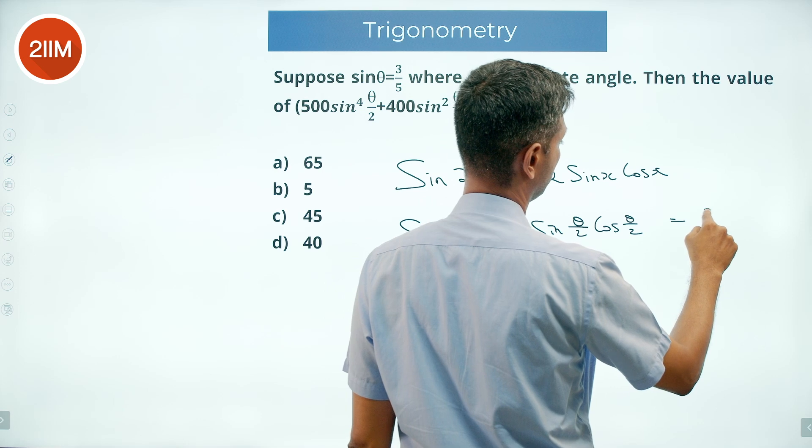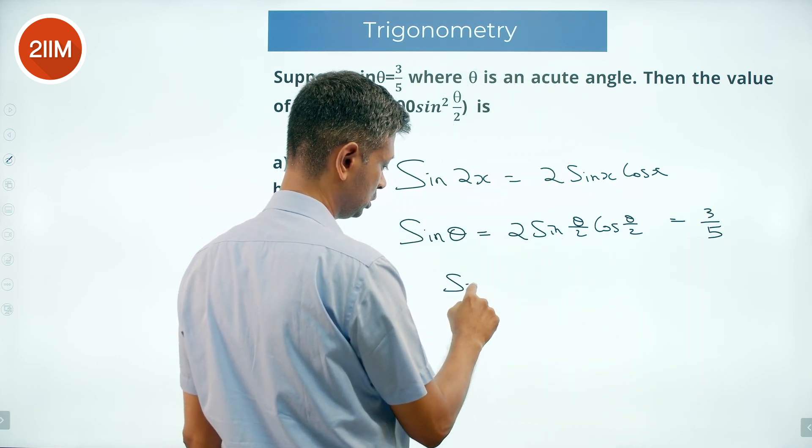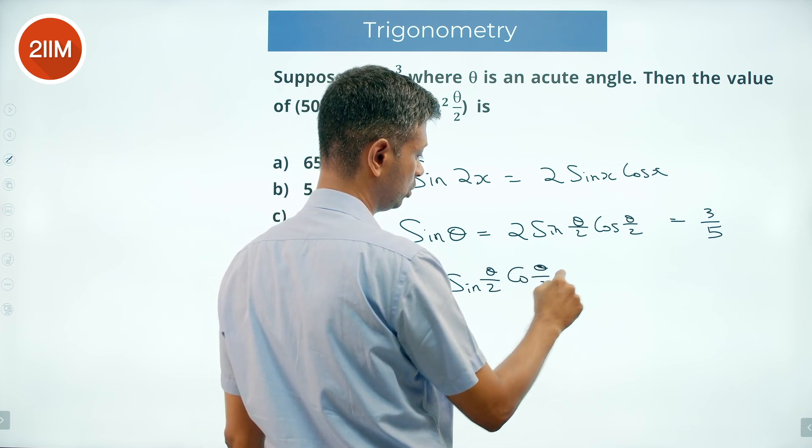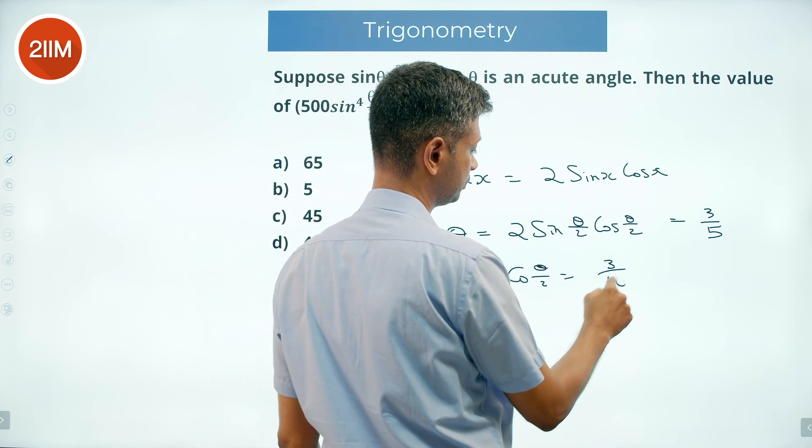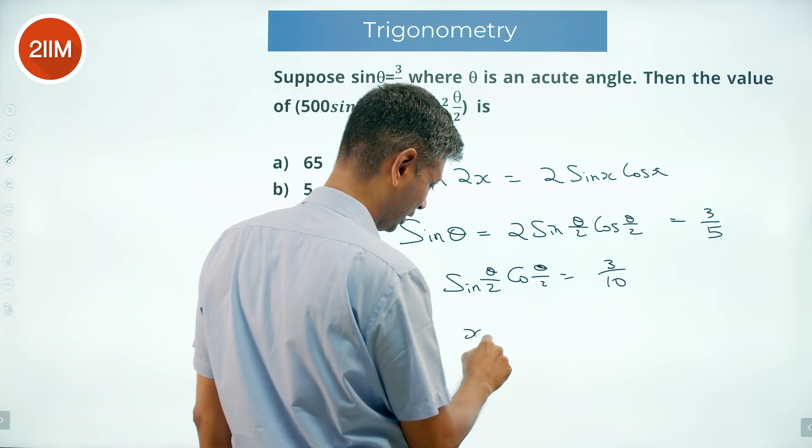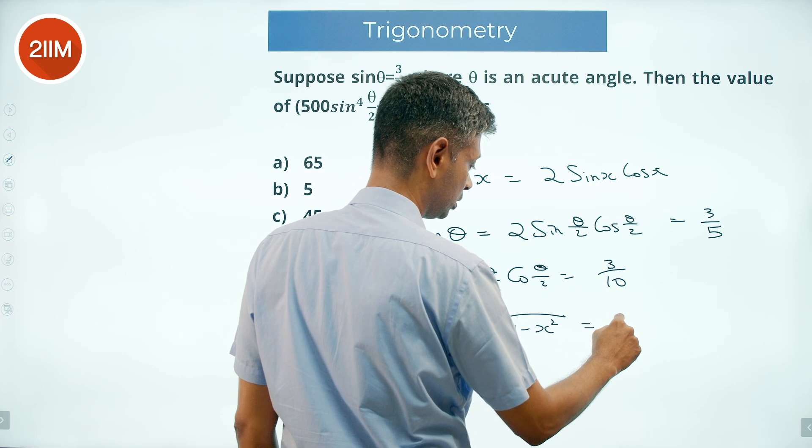This is equal to 3 by 5, so sine theta by 2 cos theta by 2 is 3 by 10. If I say sine of theta by 2 is x, then x into square root of 1 minus x square is 3 by 10.